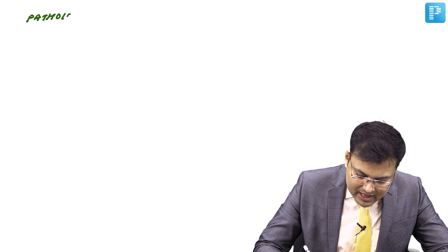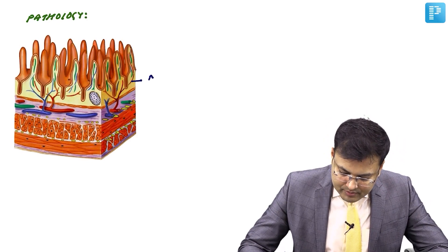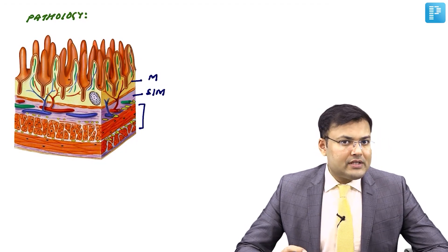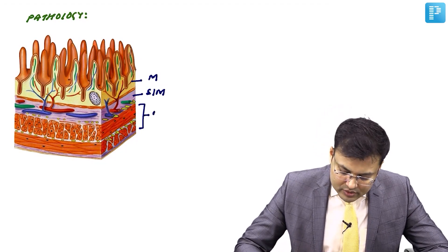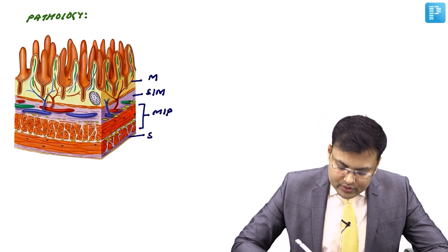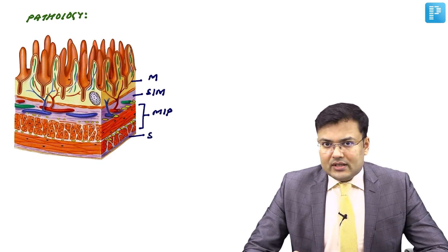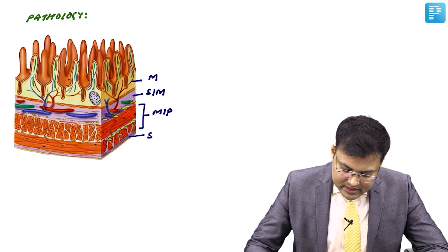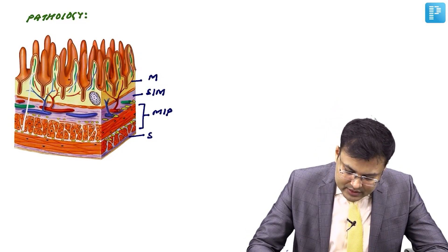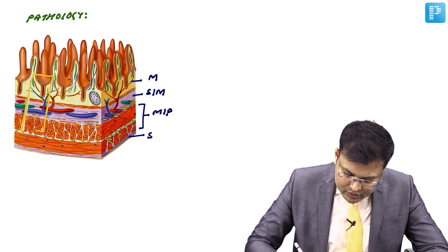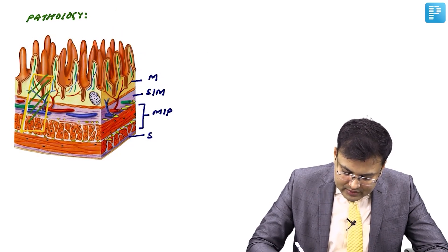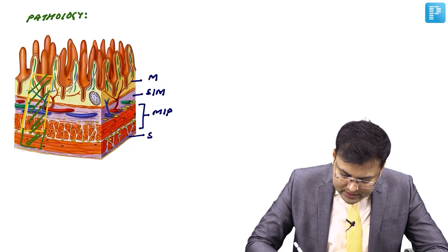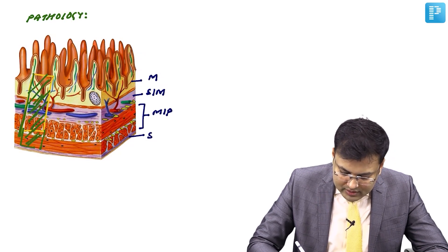First, let's see what are the layers in the bowel wall. There are four layers: mucosa, submucosa, muscularis propria — which has inner circular and outer longitudinal layers — and serosa. Crohn's disease is transmural, meaning it involves all three layers: mucosa, submucosa, and muscularis propria.